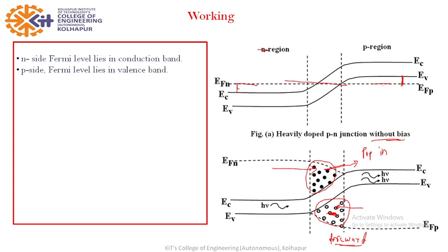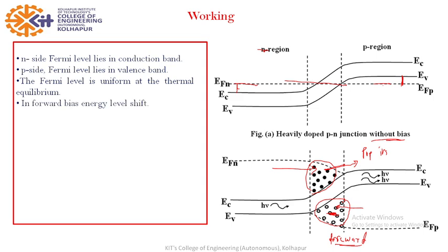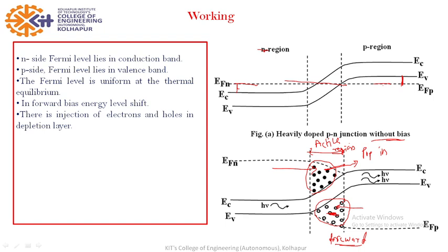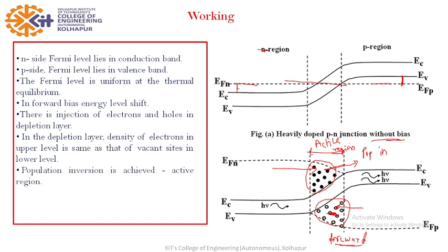To repeat: on the N side, the Fermi level is in the conduction band; on the P side, it lies in the valence band, and they are equal on both sides in thermal equilibrium. When forward bias is applied, electrons from N and holes from P cross the junction and enter the active region. The number of electrons in the upper level is greater than the number of holes in the lower level — that is population inversion. If a suitable photon is incident on the system, it starts stimulated emission. Once started, the process continues and we get laser output.